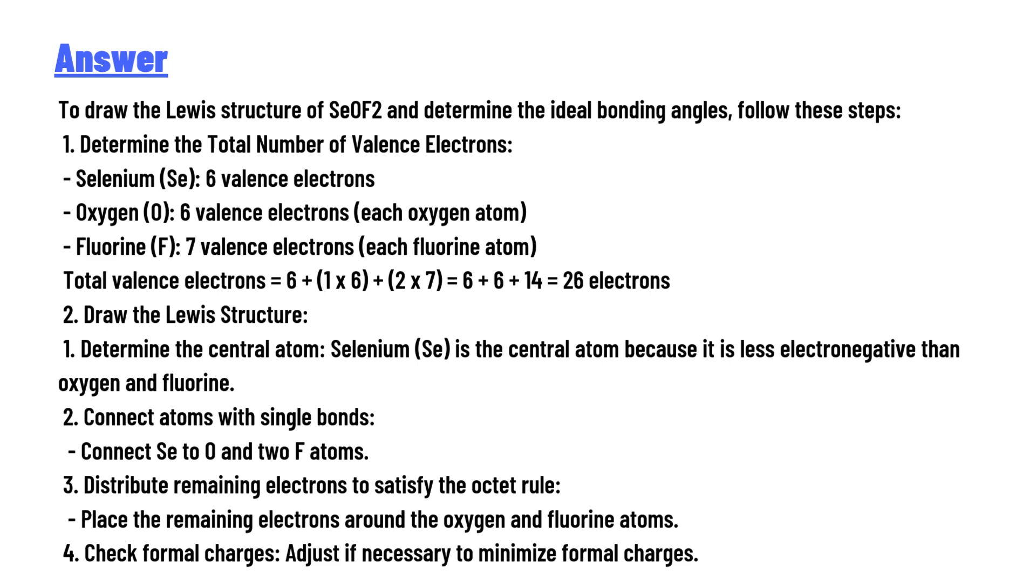Determine the total number of valence electrons. Selenium: 6 valence electrons. Oxygen: 6 valence electrons each oxygen atom. Fluorine: 7 valence electrons, 2 fluorine atoms. Pause the video and go to the calculations.